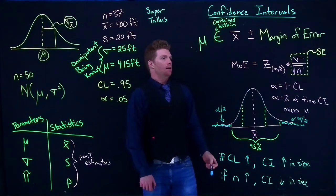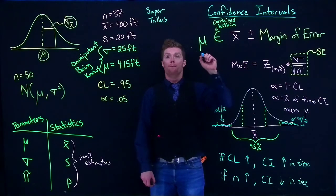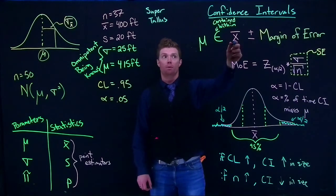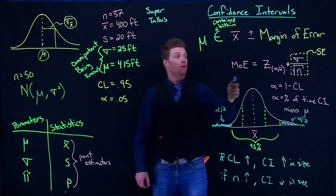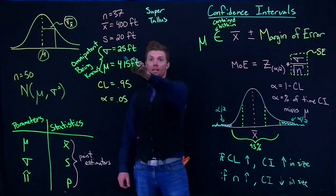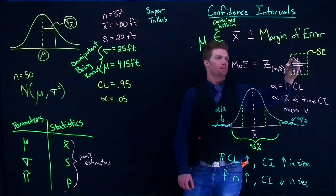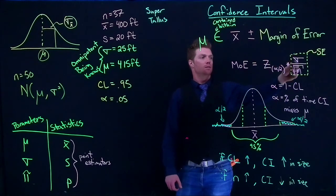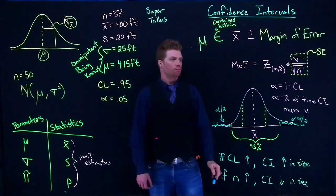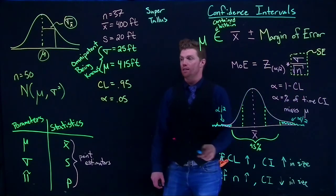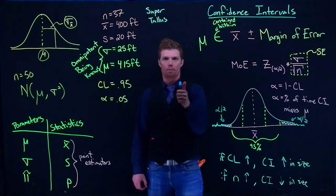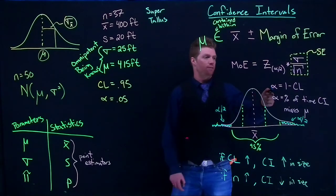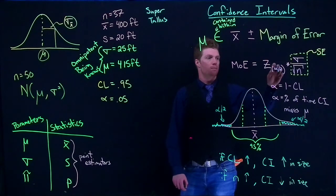This basic confidence interval shows us that the confidence interval is the point estimate x-bar plus or minus some margin of error. We figure out the margin of error — if we know the population standard deviation — using z(α/2) × σ/√n, which is the standard error. Alpha is found by 1 minus the confidence level, which will either be given to us in the problem or we establish it ourselves.